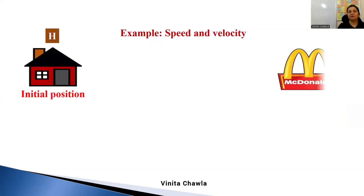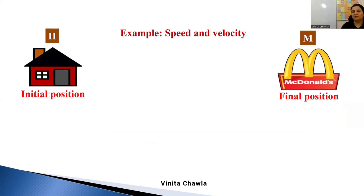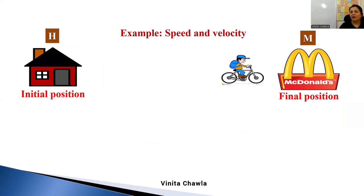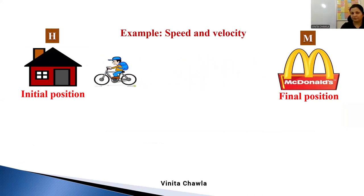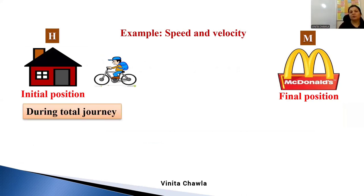Let's take an example. Your home is your initial position and you go to McDonald's — that is your final position. Then you come back. During the total journey, what is the displacement? Displacement is zero because the initial position and final position are coinciding — you were at home and you came back to home only.